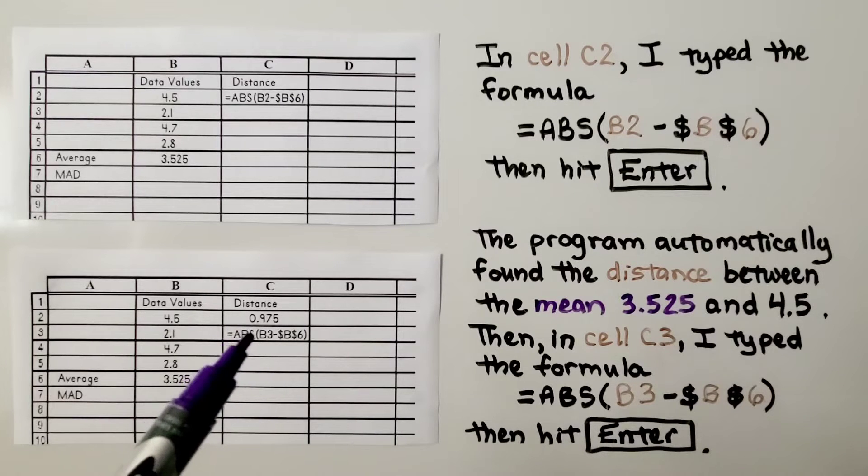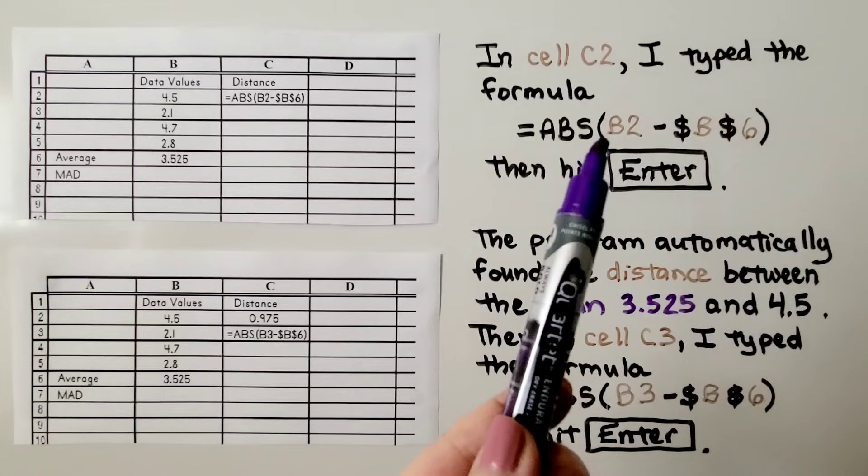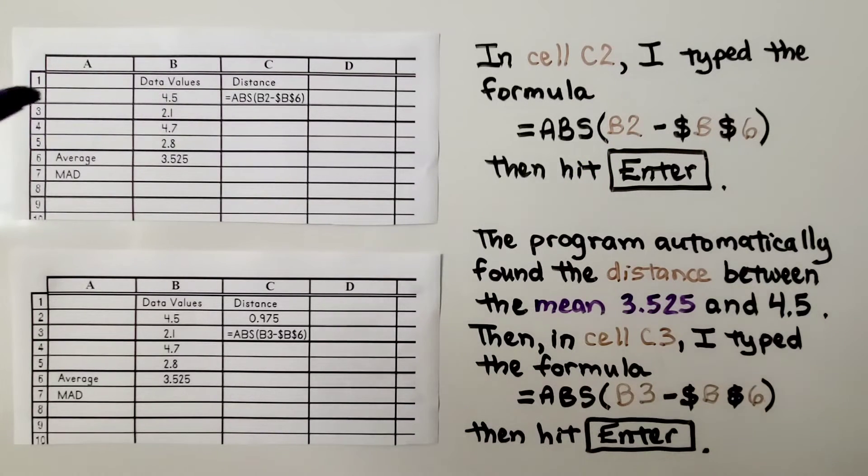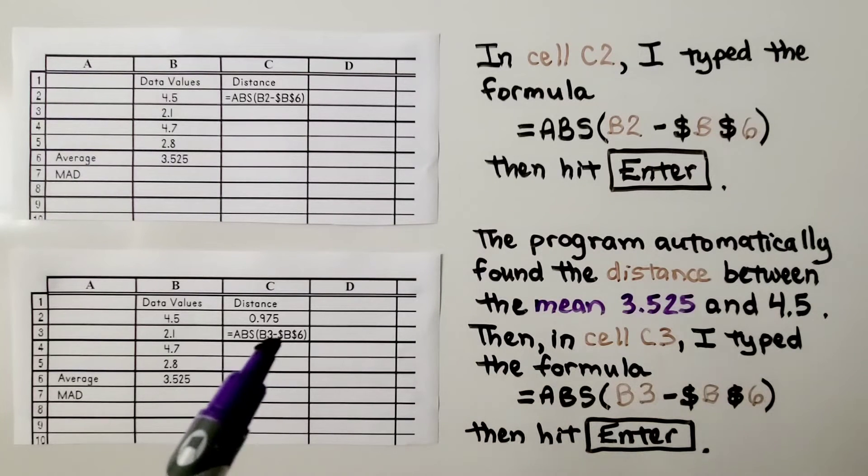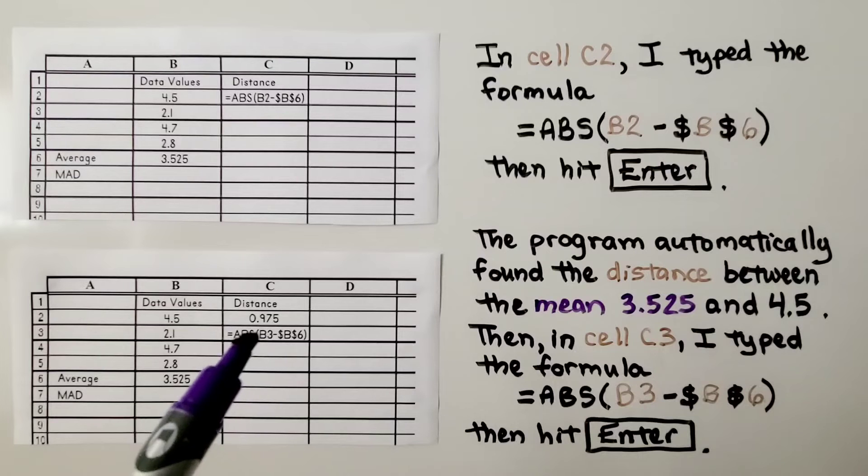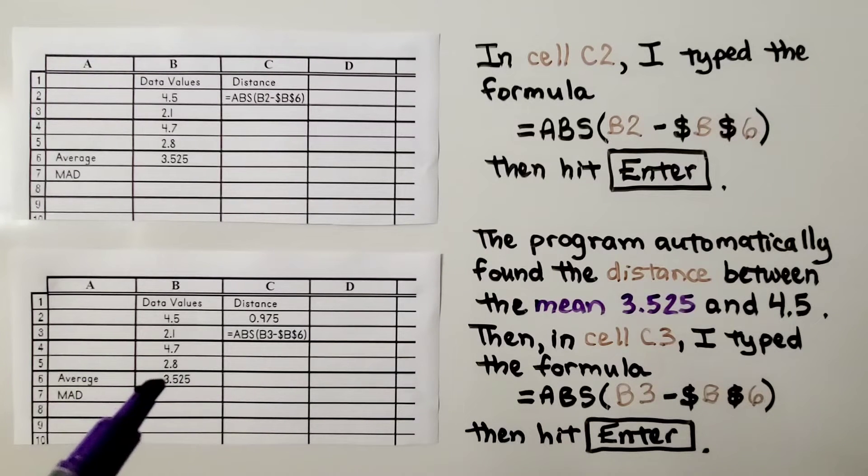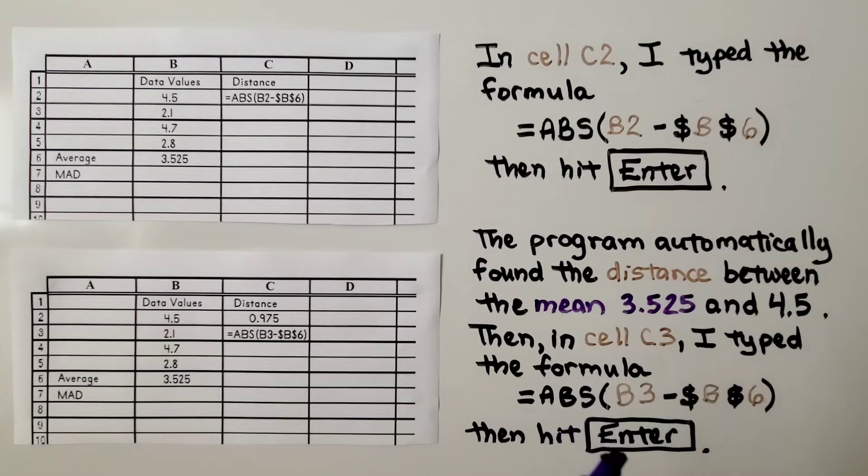Then I entered it for B3. So notice that this one had B2 because that was the distance we were trying to find for B2 and the mean or average. Now we're trying to find the distance for B3 and the mean, the average. So now, instead of B2, I put B3 and then I hit enter.